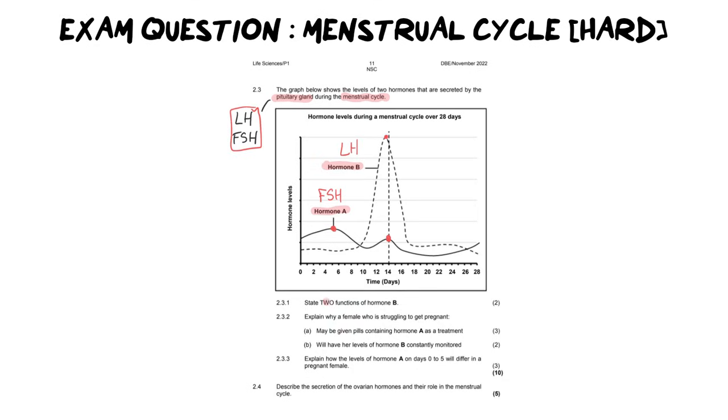So state two functions of hormone B. So you actually did need to spend some time breaking this down, which hormone is which. So what are the two functions of B? So hormone B is LH. And LH has two functions. The first one I mentioned to you was ovulation. And I think a lot of us don't know what the second function is because you kind of sit there and go, ovulation. But no, LH is there for ovulation, but luteinizing. I want you to think of the corpus luteum. It's responsible for the formation of our corpus luteum.